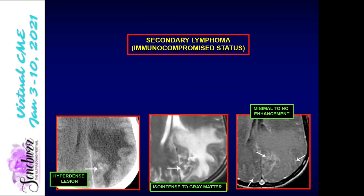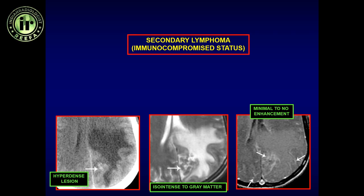This is a case of secondary lymphoma. There is a mass lesion with mass effect, low attenuation on CT, hyperintensity on T2, and faint patchy enhancement on contrast administration. This patient was immunocompromised, so we predict lymphoma. On MRI, it is iso-intense or slightly lower intensity along the medial parietal lobe, the same area showing enhancement. Without enhancement, this would be virtually indistinguishable on imaging.